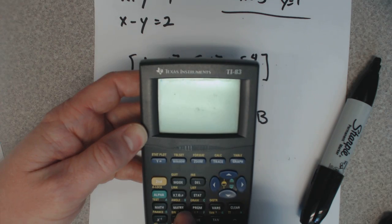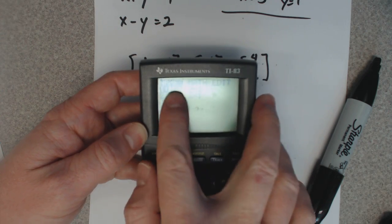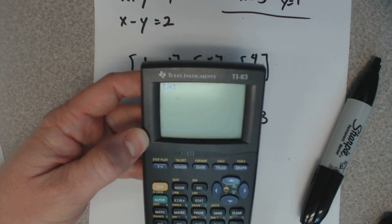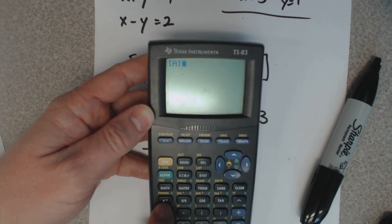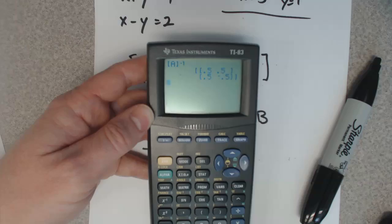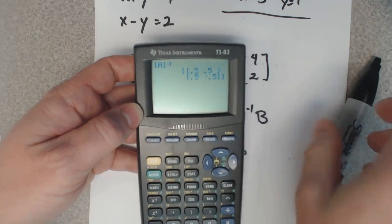So what is the inverse? I'm going to pick A and then hit the inverse button, which is right here, x to the negative one, hit enter, and it does have an inverse.